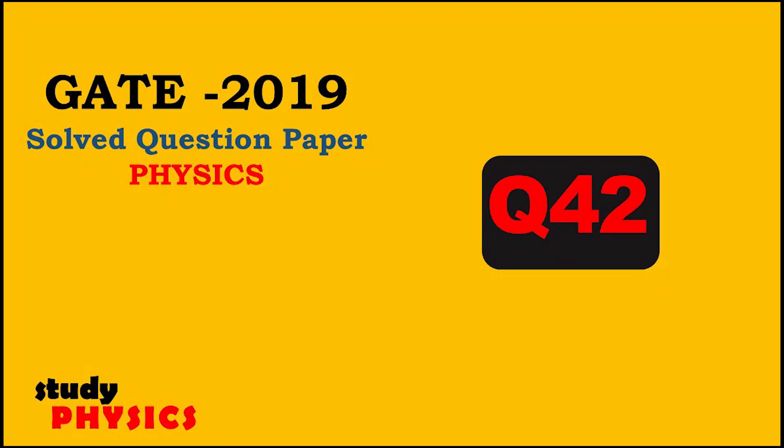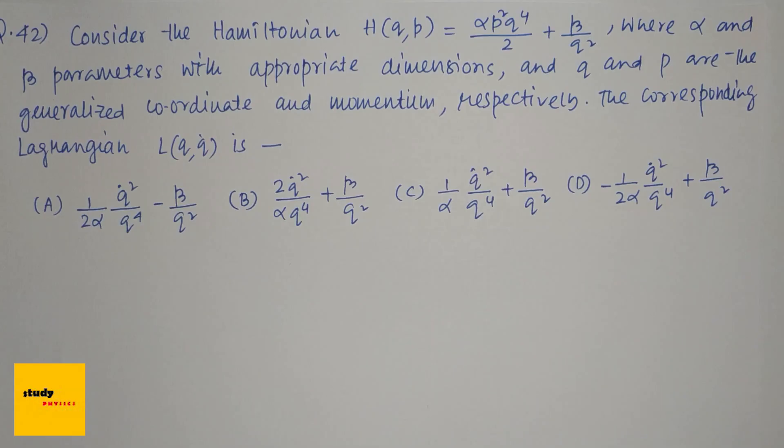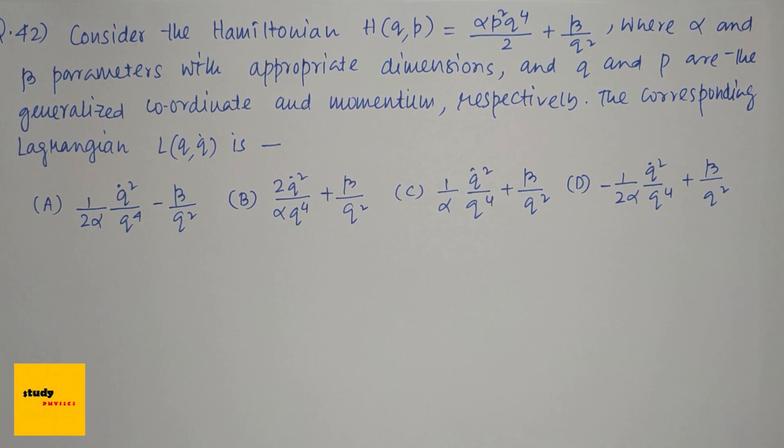Hi everyone, welcome to Study Physics. This is question number 42. Consider the Hamiltonian H(q,p) = αp²q⁴/2 + β/q², where α and β are parameters with appropriate dimensions, and q and p are the generalized coordinate and momentum respectively. Find the corresponding Lagrangian L(q,q̇).